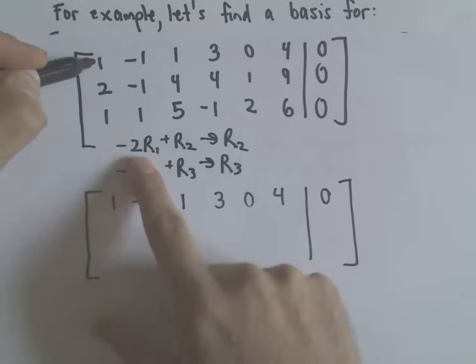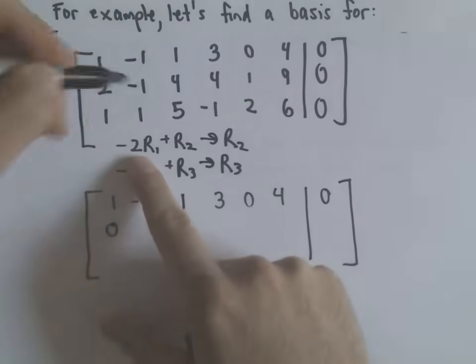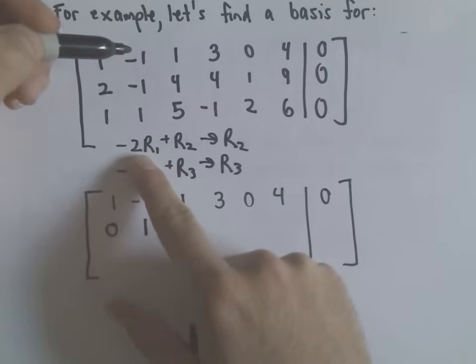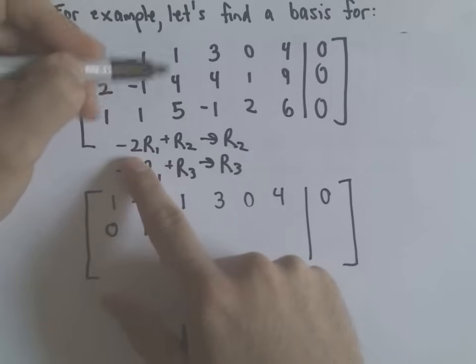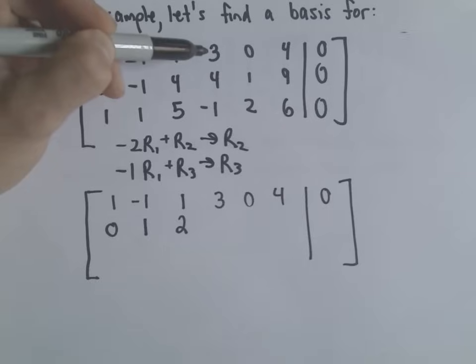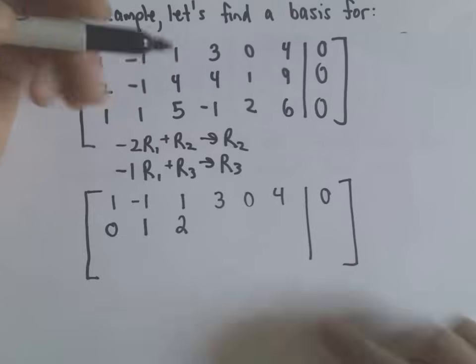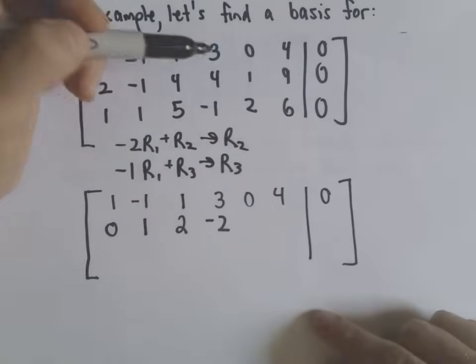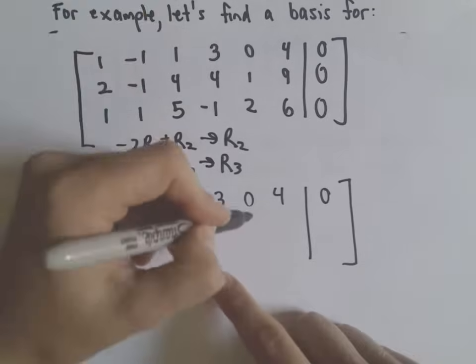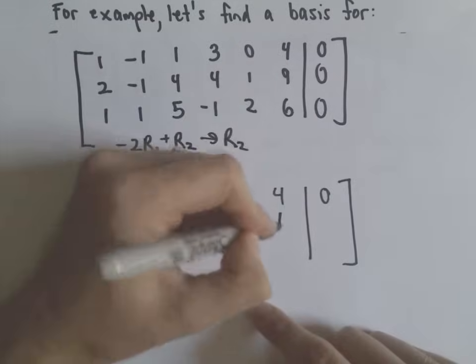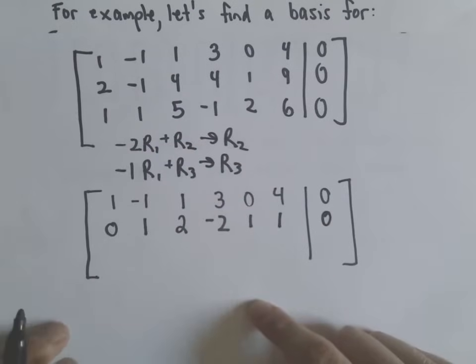So 1, negative 1, 1, 3, 0, 4, and 0. Probably if you're writing this, you could even just leave these zeros off as well. Nothing's going to change with those. All right, so if we do negative 2 times 1, that's negative 2, plus 2 is 0. Negative 2 times negative 1 is 2, minus 1 is 1. So that's already nice. We've got negative 2 times 1 plus 4, that'll give us positive 2. Negative 2 times 3 is negative 6, plus 4, that's going to be another negative 2. We've got 0 plus 1 which is 1. Negative 2 times 4 is negative 8, plus 9 is positive 1. And then we'll have 0. I think all the arithmetic there is okay.